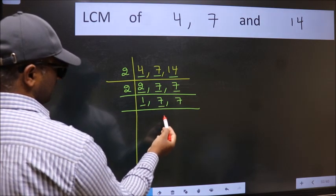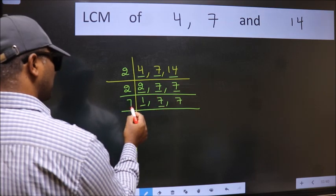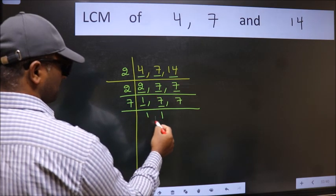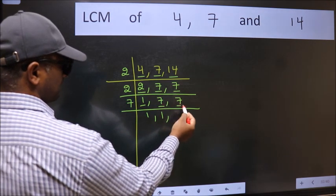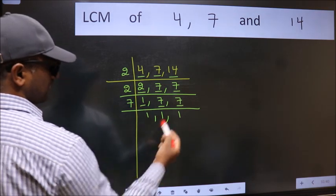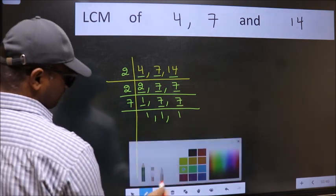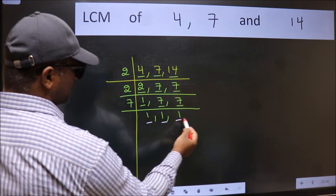So focus on the next number 7. 7 is a prime number, so 7 1 7. The other number 7, when do we get 7 in 7 table? 7 1 7. So we got 1 in all the 3 places.